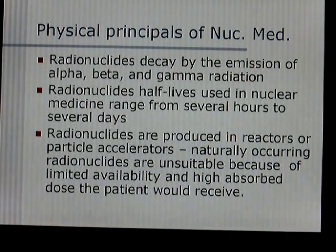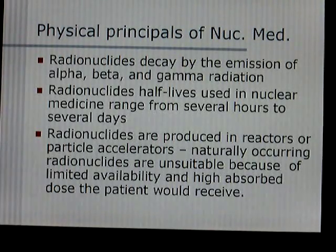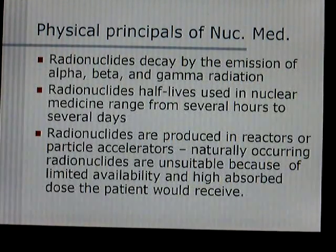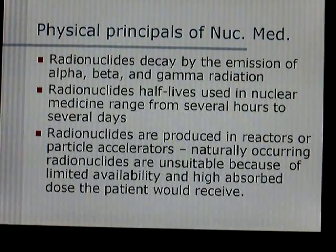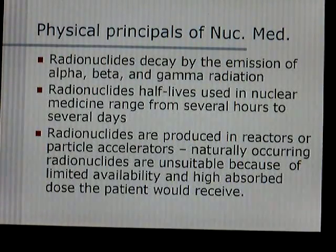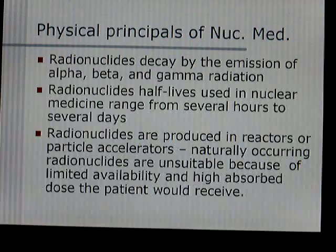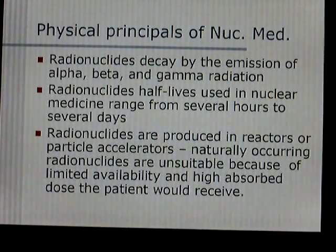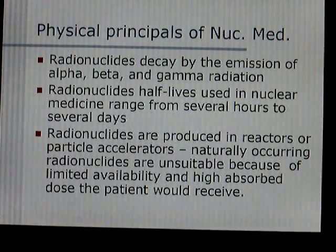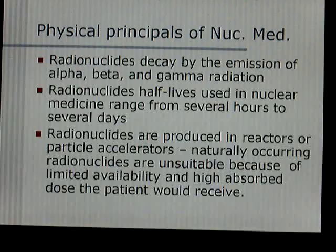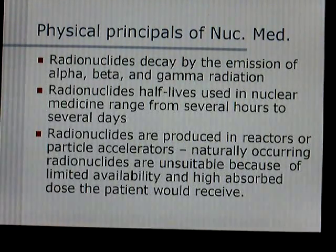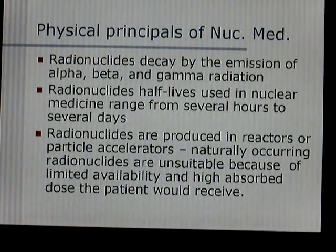The physical properties of nuclear medicine: radionuclides decay by the emission of alpha, beta, and gamma radiation. Half-lives used in nuclear medicine range from several hours to several days — half-life being the amount of time it takes to lose half of its original energy. Radionuclides used are not naturally occurring; they're produced in reactors and particle accelerators. Naturally occurring radionuclides are not suitable because they're limited in availability and deliver a much higher radiation dose to the patient.